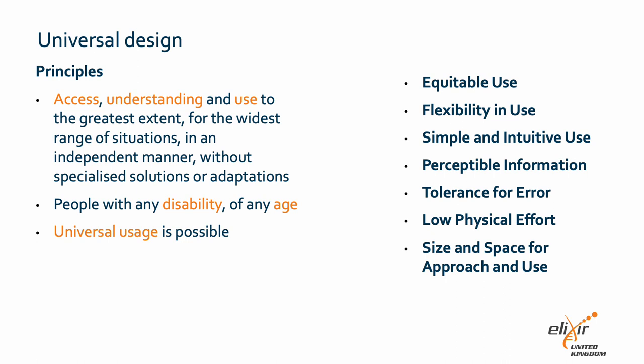Universal design is a set of principles which, when applied, lead to universal usage of a resource. The principles were initially designed with physical space in mind but can be applied elsewhere, including in data management. The key goal is to allow access, understanding and use to the greatest extent, in an independent way and without needing adaptations for individuals including those with disabilities. The seven principles are: equitable use — people can use it in the same way regardless of individual identity, without segregation; flexibility in use — choice in use method and adaptability to individual requirements; and simple and intuitive use — low complexity and accessibility for different skill levels and languages.